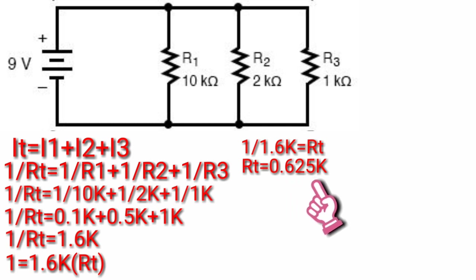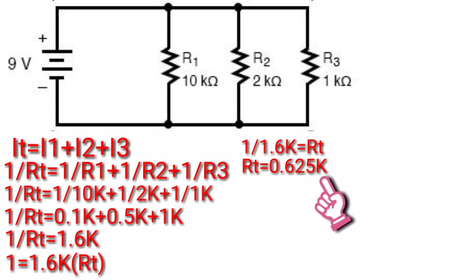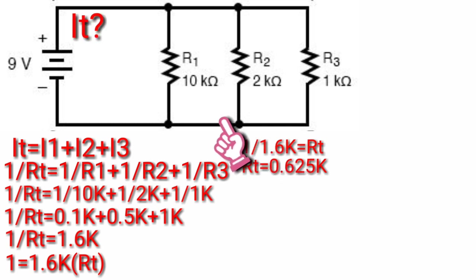Now we have total voltage of 9V and total resistance of 0.625K. With these values, we can solve for the total current of the circuit.